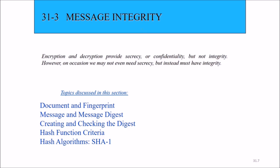Then we come to message integrity. Encryption and decryption provide secrecy or confidentiality, but they do not provide integrity. We may not even need secrecy, but we would also like to have integrity. For that, we will see the document fingerprint, message digest, creating and checking the digest, hash function criteria, and the hash algorithm SHA-1.